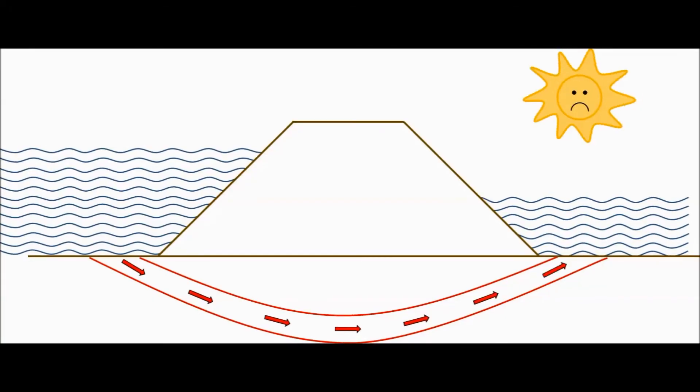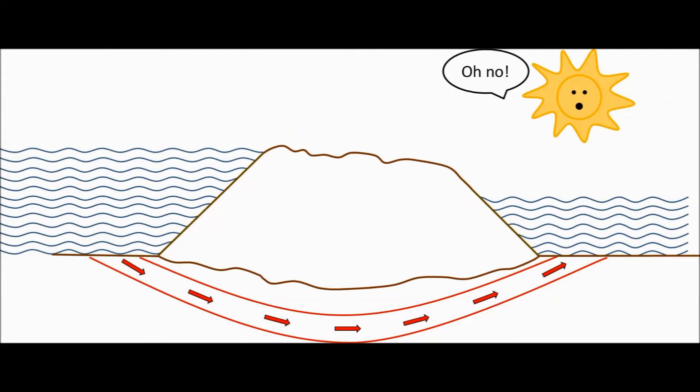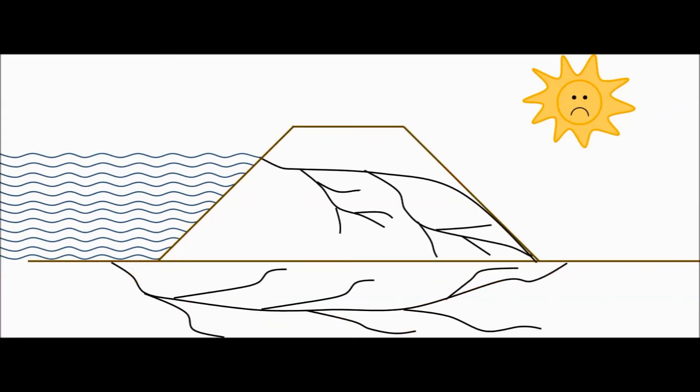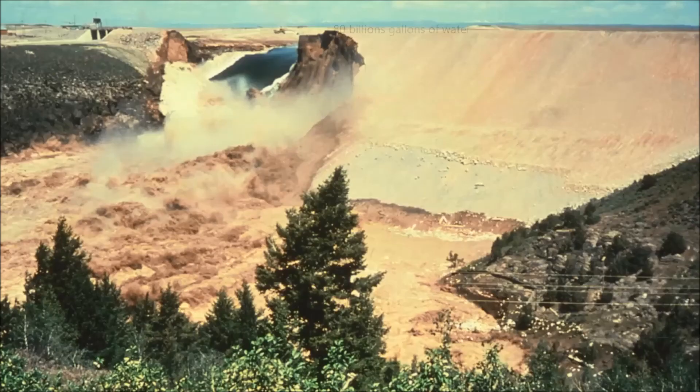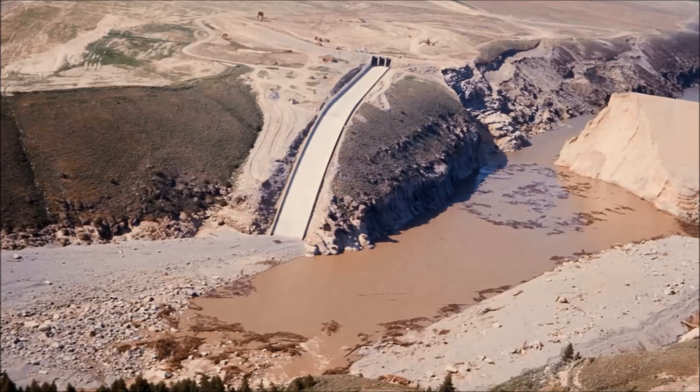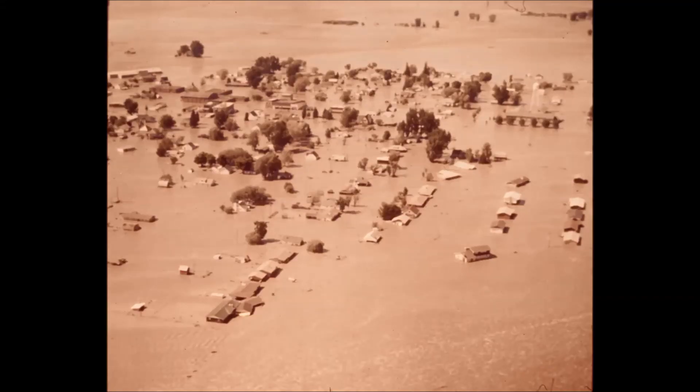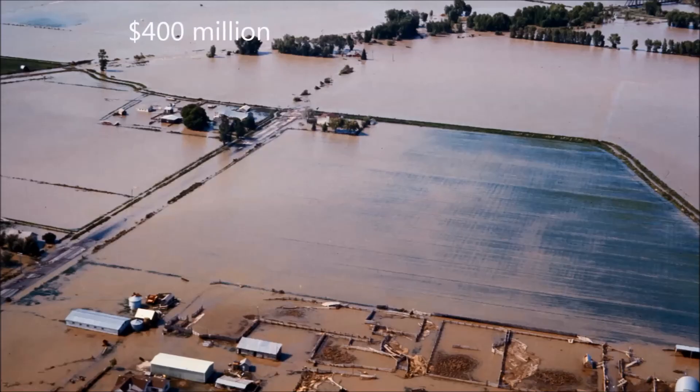The same phenomenon occurs during seepage under a dam, which can ultimately lead to dam failure. Piping within and beneath the dam body were identified as causes of the Teton Dam failure in 1976. The dam failed with catastrophic consequences. 80 billion gallons of water rushed out from the reservoir, destroying two towns, displacing 25,000 people, and causing approximately 400 million dollars in damages.